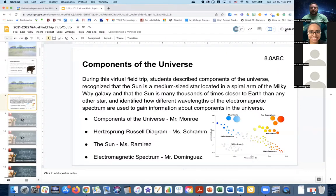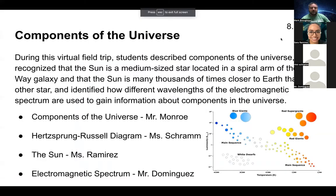Thank you, Mr. Dominguez. A question that came in was: what type of light does the new James Webb telescope see? It sees infrared light, which is important because the previous best telescope, Hubble, only saw the visible spectrum of light. Now we're seeing a whole new part of the electromagnetic spectrum with the James Webb telescope. This virtual field trip was titled Components of the Universe. Students described components of the universe, recognized that the sun is a medium-sized star in a spiral arm of the Milky Way, and identified how different wavelengths of the EM spectrum are used to gain information about the universe.